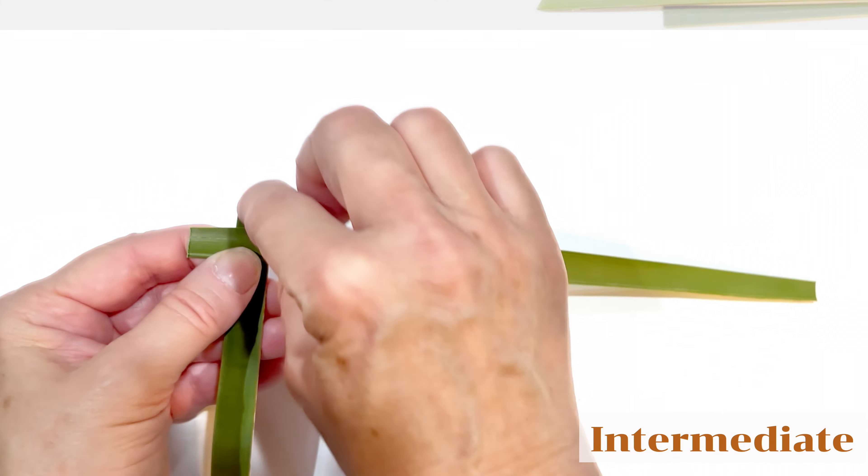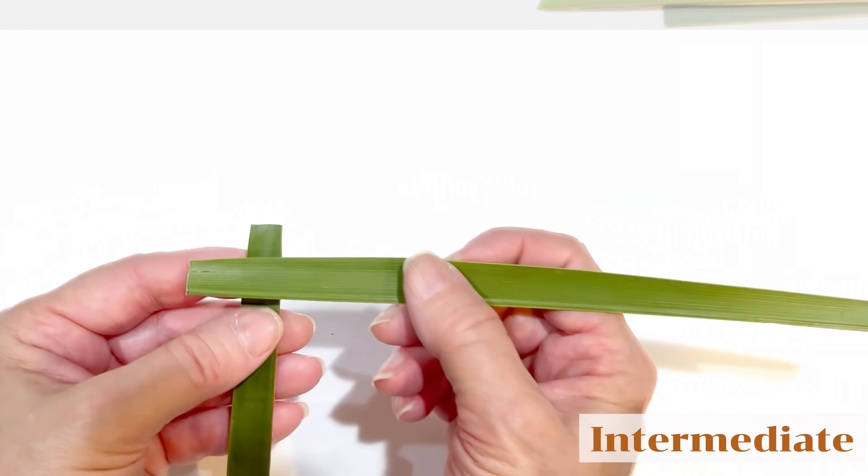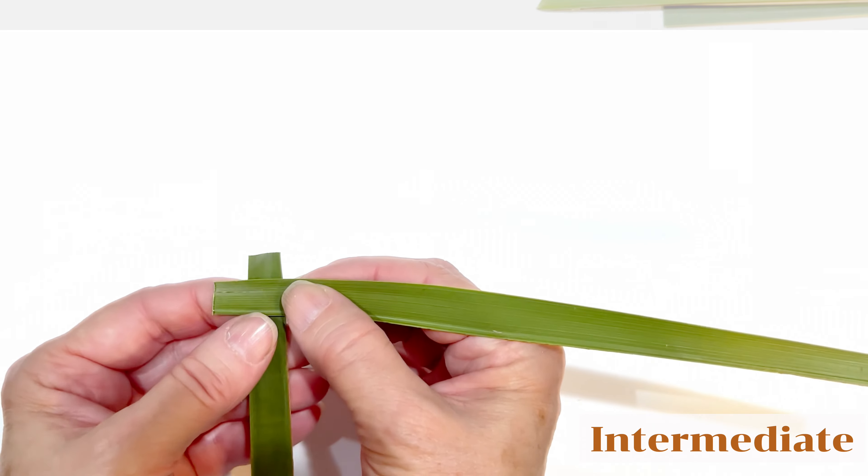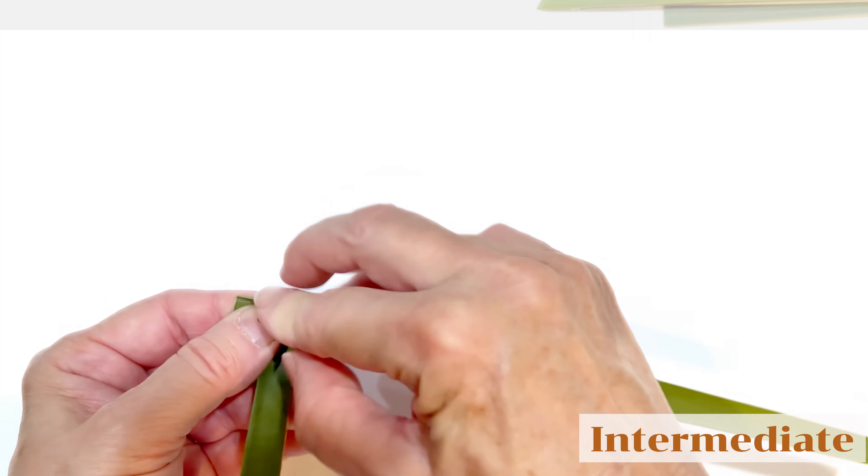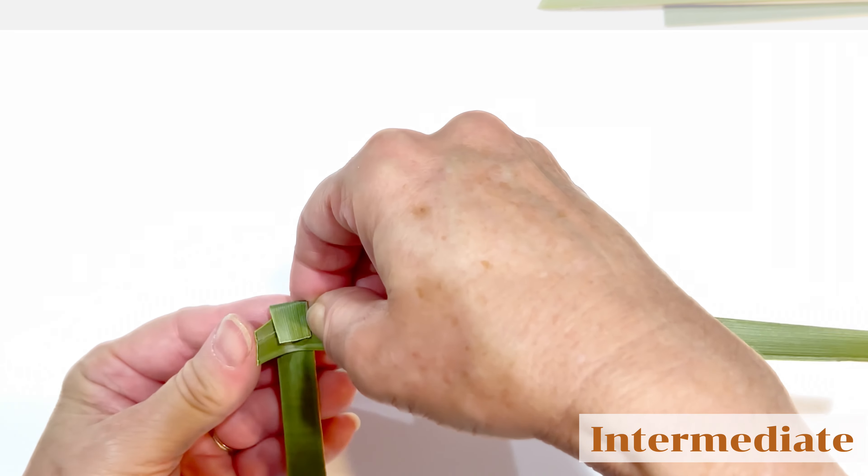Make a right angle with both of them. Leave enough space to bring this down and this one over. The horizontal one is overlapping the vertical one. Then we're bringing this down. So over. Bring the side over.